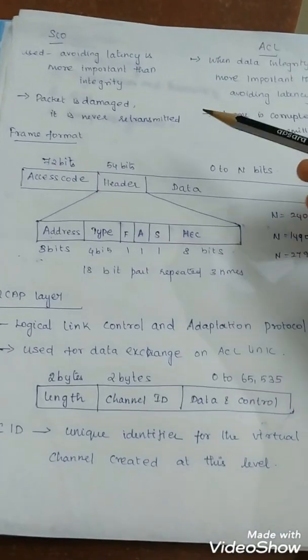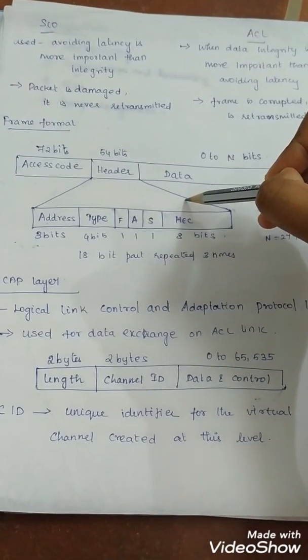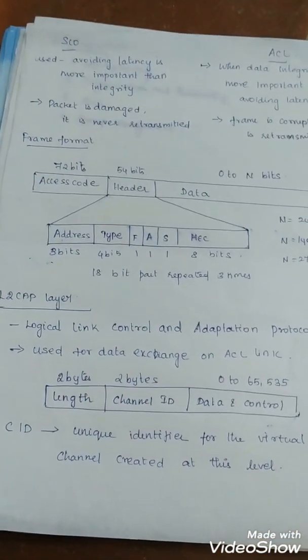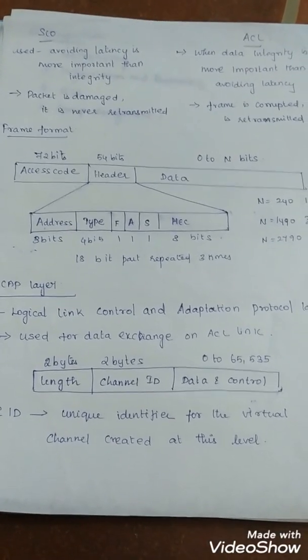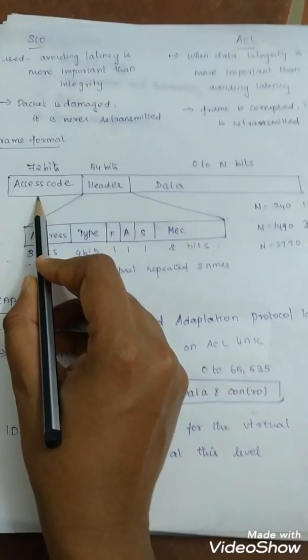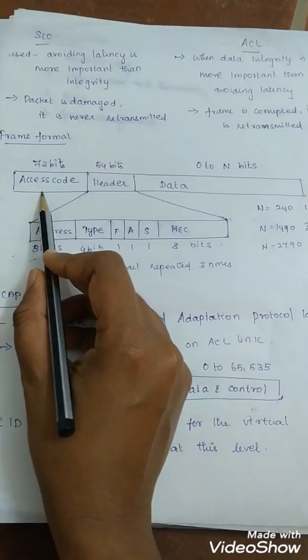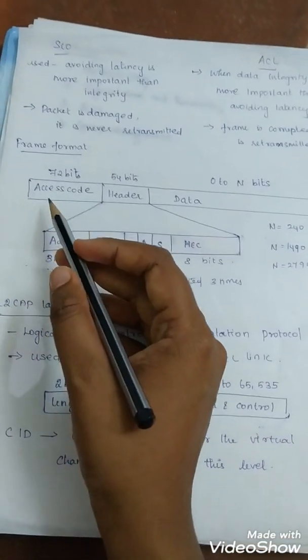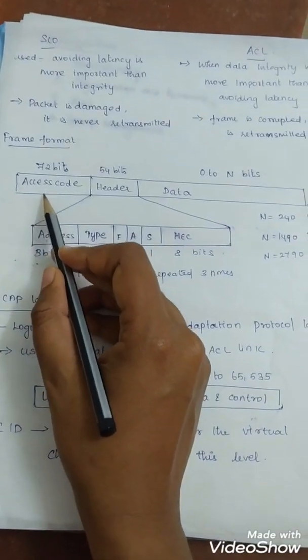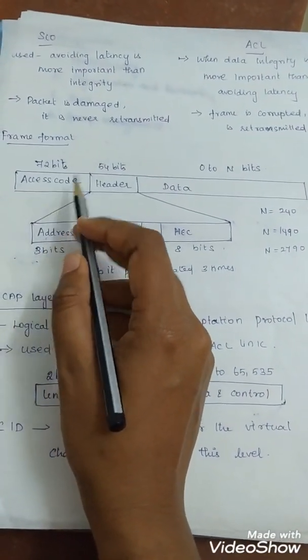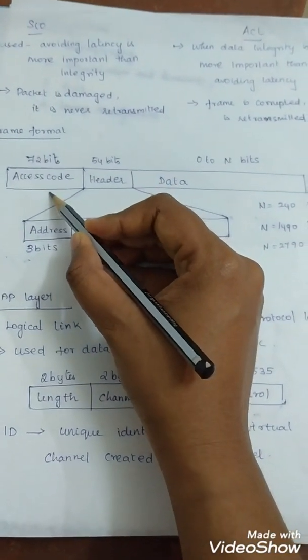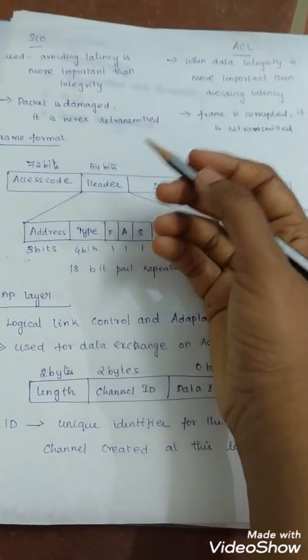Next, frame format. First one: access code. Access code is a 72-bit field containing synchronization bits. The identifier of the primary is to distinguish the frame from one piconet to another.